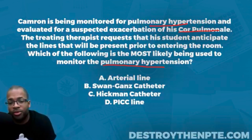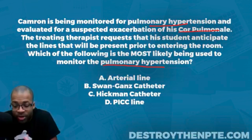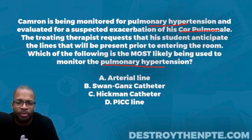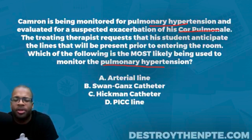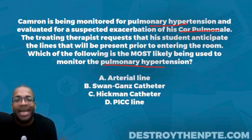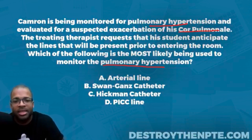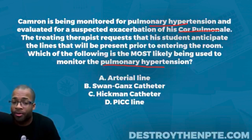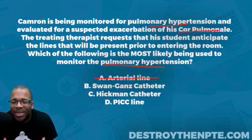The arterial line measures blood pressure in real time. Your typical blood pressure cuff across the brachium gives intermittent blood pressure, but the arterial line does it continuously. However, the question doesn't state any desire for real-time blood pressure analysis. We're specifically trying to monitor pulmonary hypertension, and that is not what the arterial line does best. So we can go ahead and strike through A.